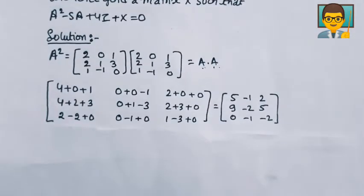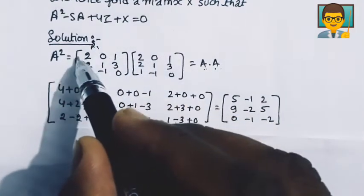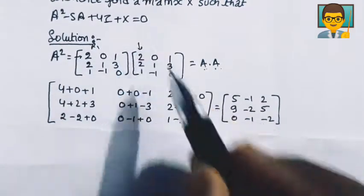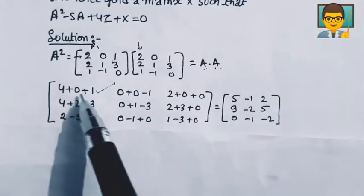The multiplication rule, we know, is first row with first column. So 2 into 2, 0 into 2, 1 into 1. You can see this is the value.